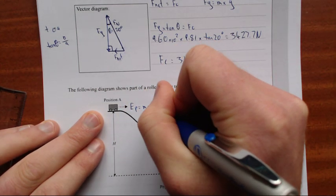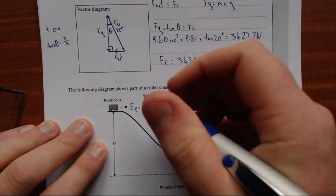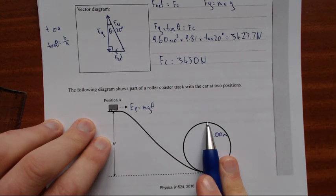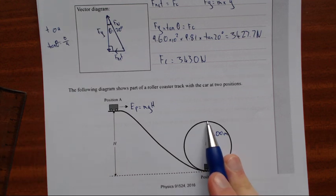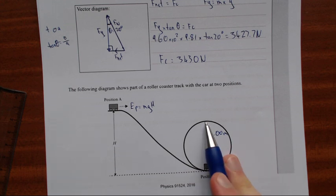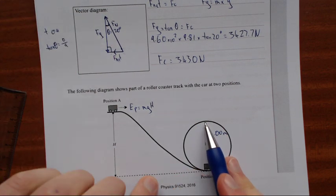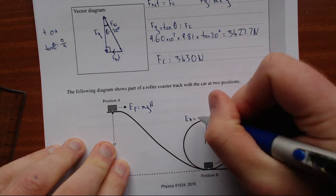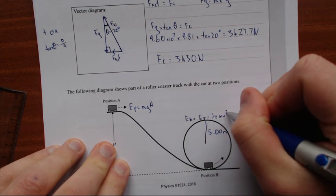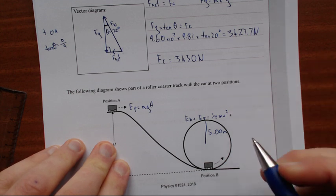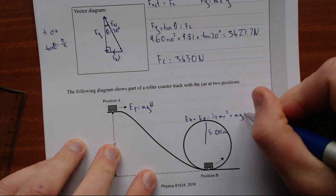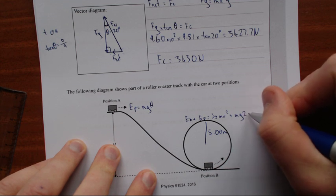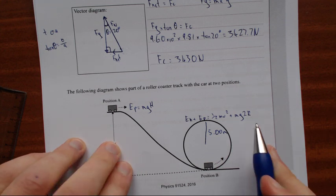So here it's got Ep equals mg times big H, because they've given us the big H, mgh. So it's got only potential. Here it's got kinetic because it's moving, and it's still got potential because it's still above the ground. So here we've got Ek plus Ep, which equals half mv squared plus mg. What's the height? So the height is just two times the radius, because that's one radius, two radii gives us the diameter. So I'm going to put 2r. Big r is going to be the radius.